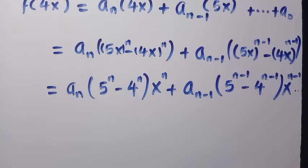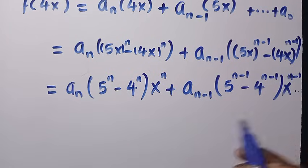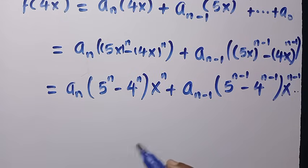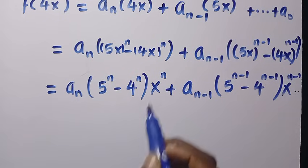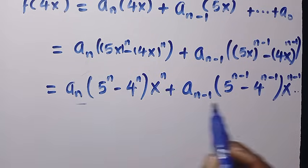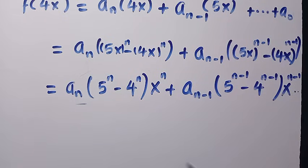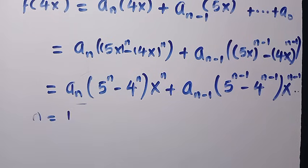The left-hand side of f(5x) minus f(4x) equals this expanded expression, and the right-hand side equals 2x. Since 2x is a linear polynomial, we expect the degree to be 1. Therefore n equals 1, and all higher-degree terms vanish.